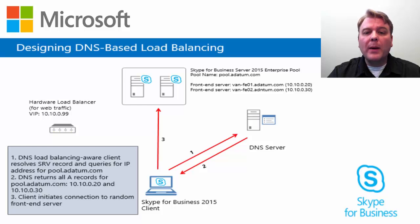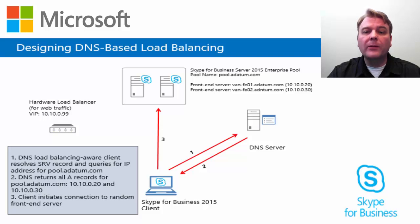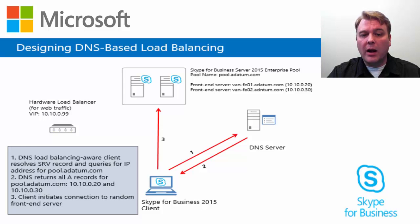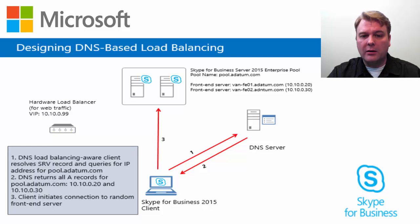DNS load balancing works by having two DNS A records registered for each member of a server pool. One DNS A record relates to the server's own FQDN, and the other record relates to the front-end server pool's FQDN. When a client queries for the DNS service SRV record to connect, the DNS server responds with all IP addresses that are registered with the front-end server pool FQDN.